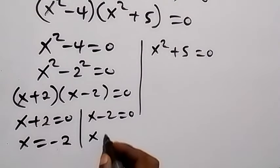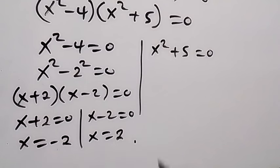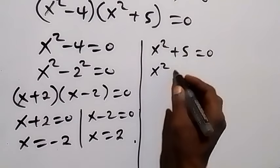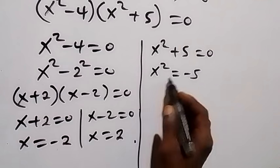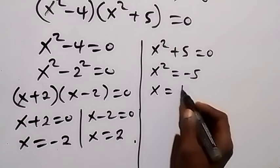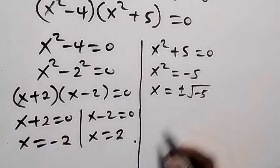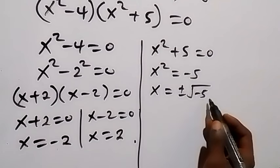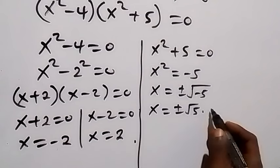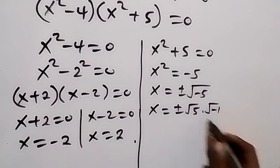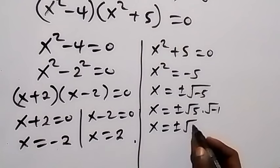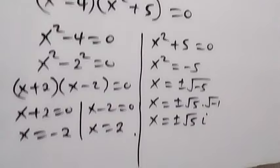From x squared plus 5 equals zero, we take 5 to the other side: x squared equals minus 5. Square rooting both sides gives x equals plus or minus the square root of minus 5. We separate this as root 5 times root minus 1. Since root minus 1 is i, a complex number, x equals plus or minus root 5 times i.